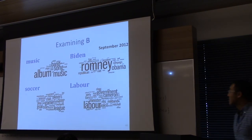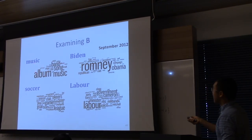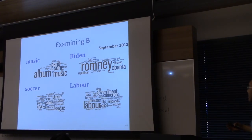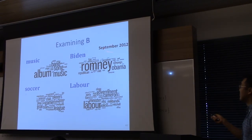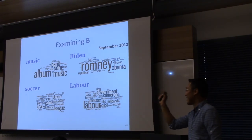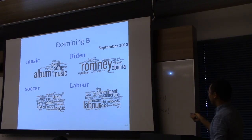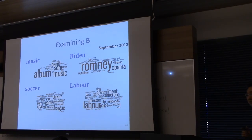Here are some columns of the B matrix — these are individual badges. For people who identify with music in their Twitter profile, this is the type of words appearing in articles that music-identified users tend to tweet. For users identifying with Biden, or with the UK Labour Party, these are the articles they tend to tweet. This is trained from a training set from September 2012.